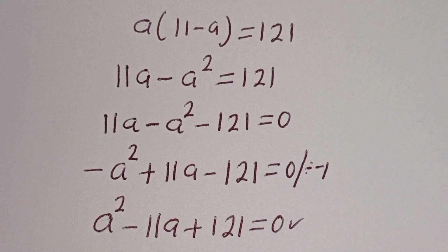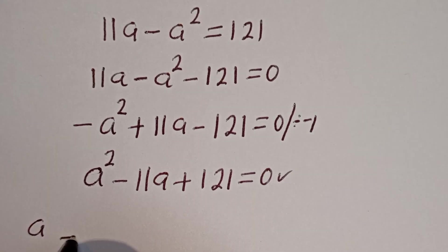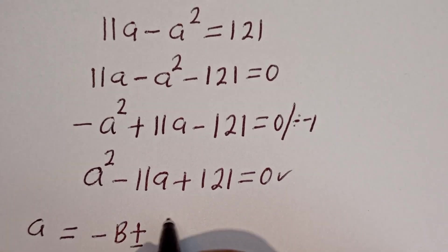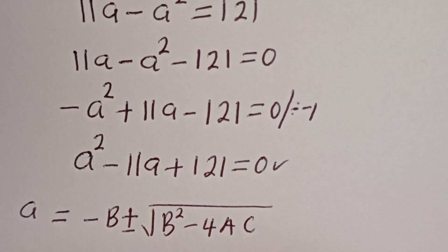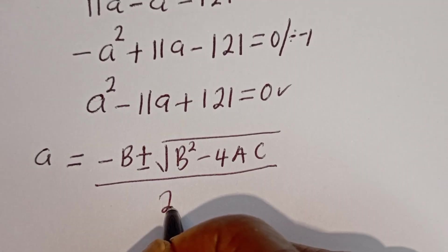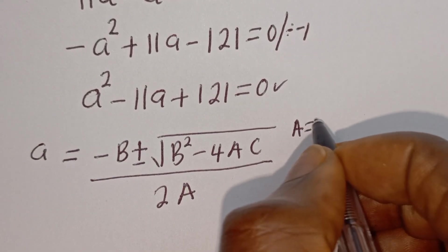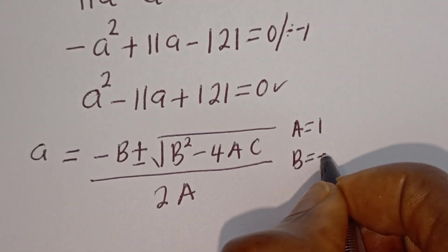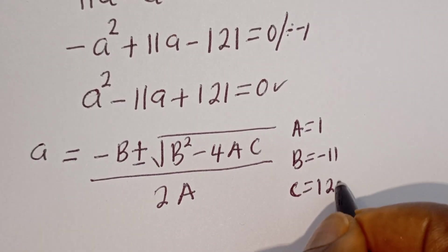This is a quadratic equation. Let's solve this using the quadratic general formula. Our quadratic general formula gives A is equal to minus B plus or minus square root of B squared minus 4AC, divided by 2A. From this equation, A equals 1, B equals minus 11, C is equal to 121.